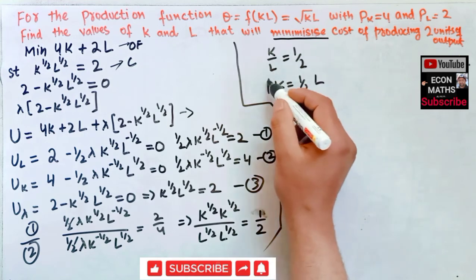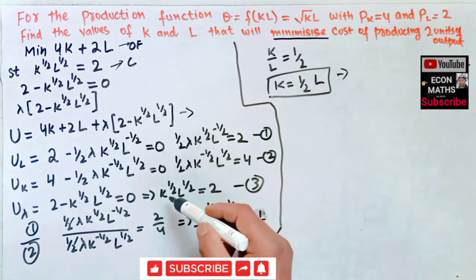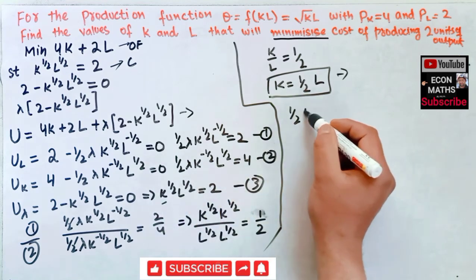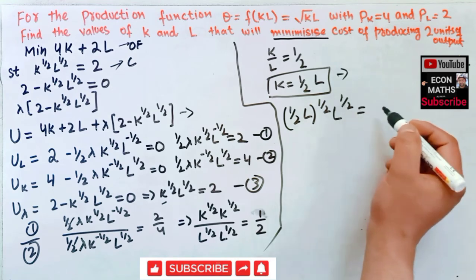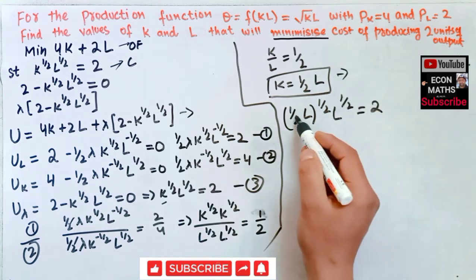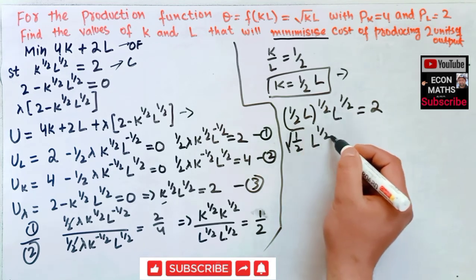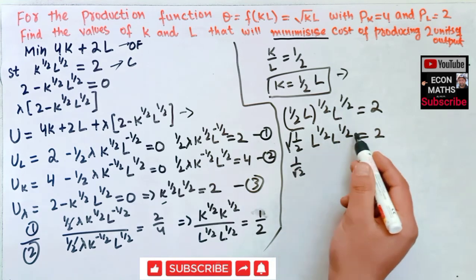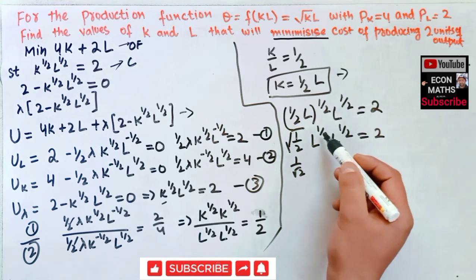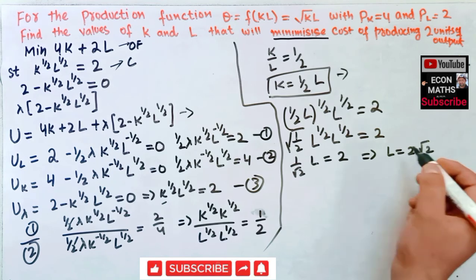From K/L = 1/2, we get K = L/2. Substituting this into equation three: (L/2)^(1/2) · L^(1/2) = 2, which becomes (1/√2) · L = 2. Solving, L = 2√2. So the optimal level of labor is L = 2√2.